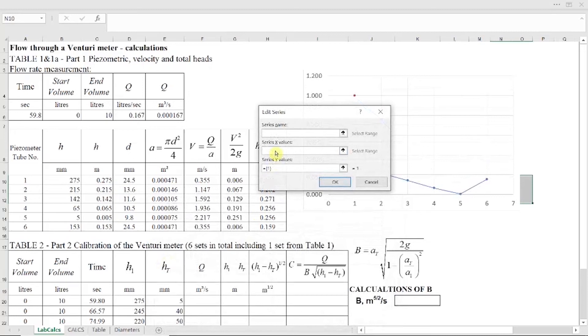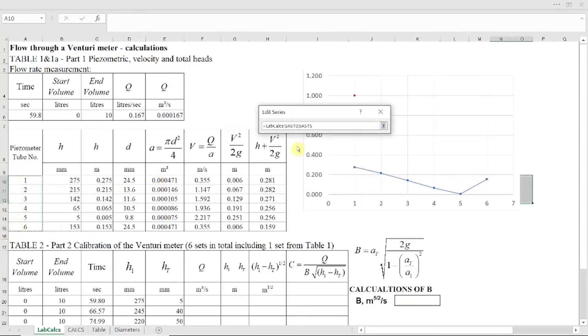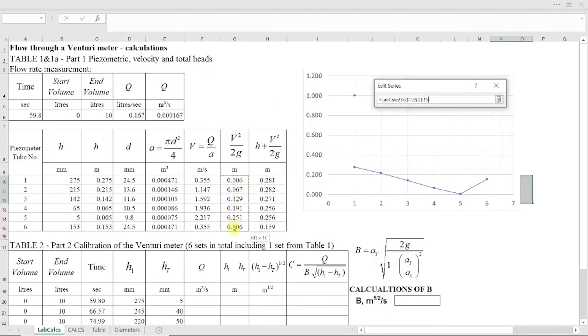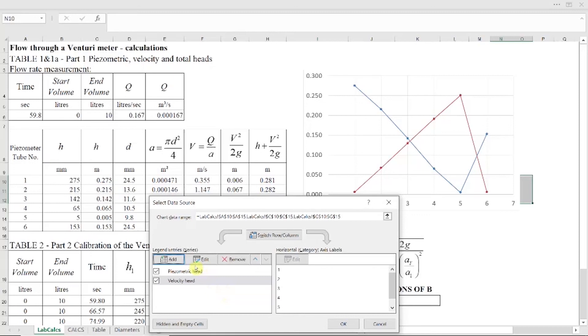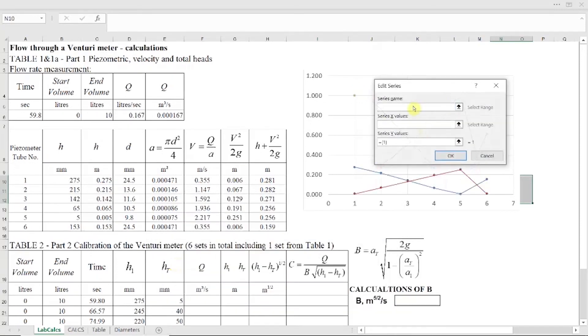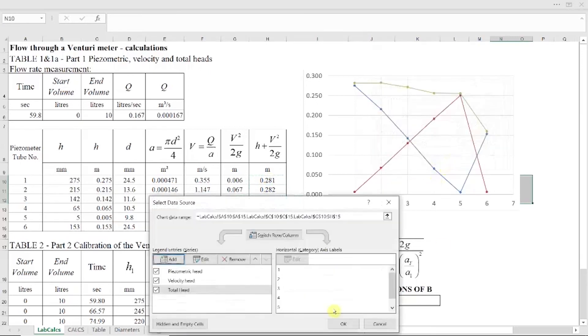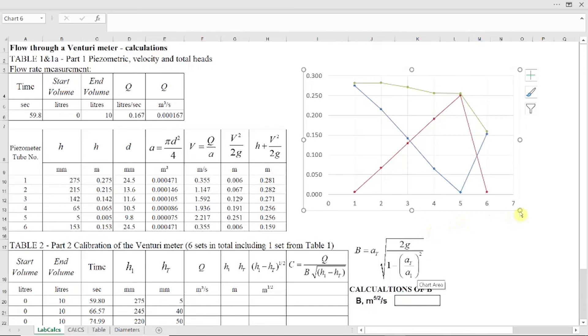Now I have to add velocity head. Velocity head, I click on X, which is also my tube number. And now I click on my Y, which is my velocity head. And finally, what I need to do, I add one more line, which is my total head. X is the same tube number. And for my total head, this would be the values in the last column, which is my total head. All three heads are plotted.